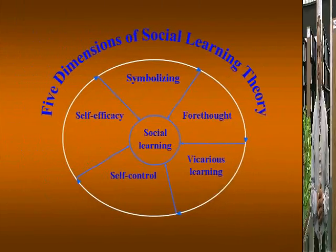Let's look at the five dimensions of the social learning theory. In the five dimensions of social learning theory, we have symbolism, forethought, vicarious learning, self-control, and self-efficacy.